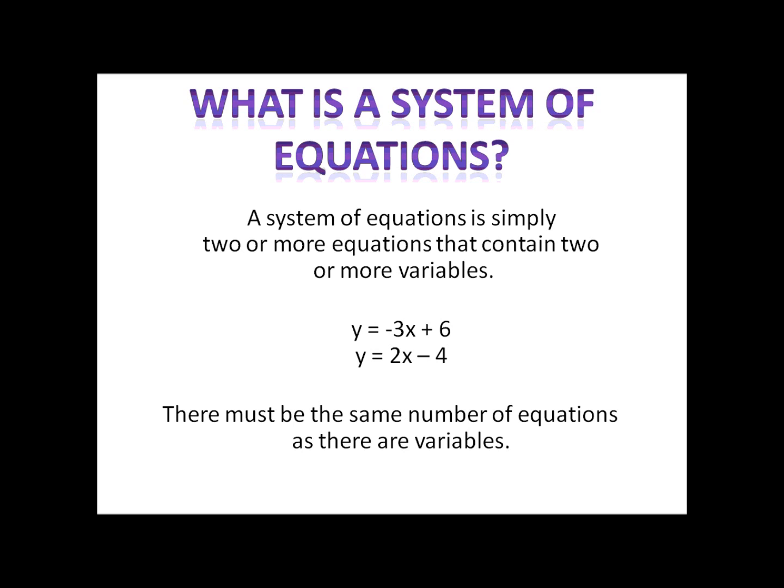For instance, we see here y equals negative 3x plus 6 and y equals 2x minus 4. Here we have two equations and two variables. The number of equations must be the same as the number of variables. For instance, if you had an equation that had x, y, and z — three variables — you'd have to have three equations.